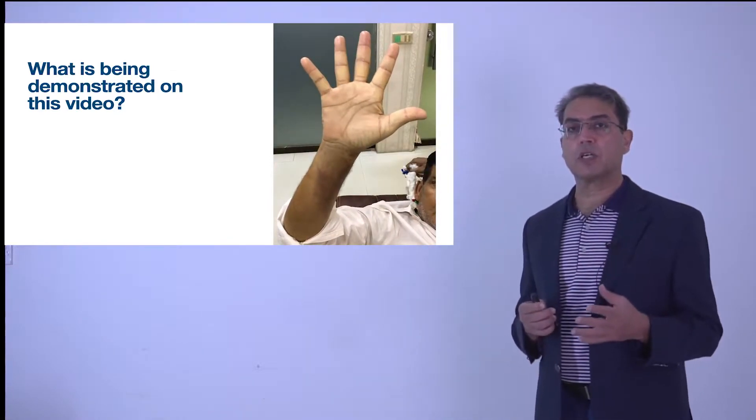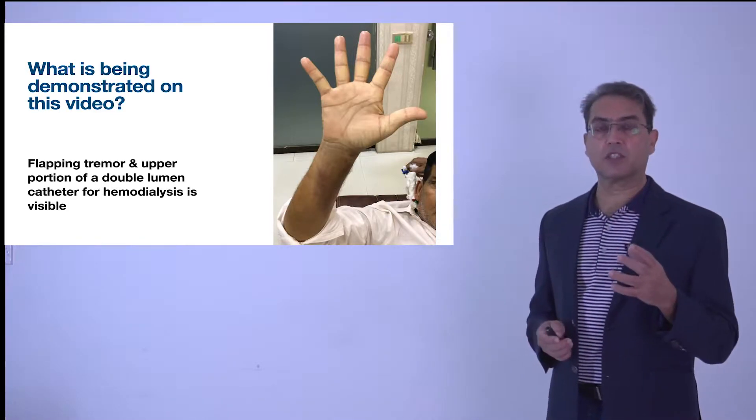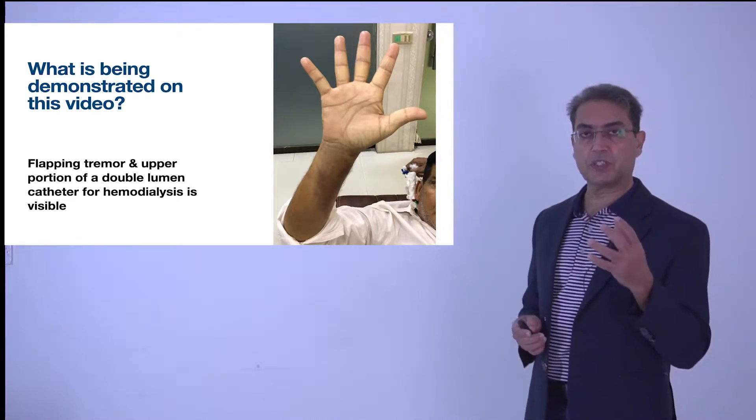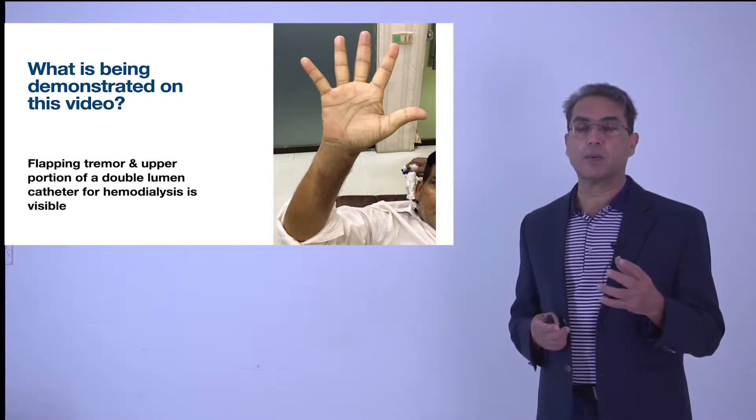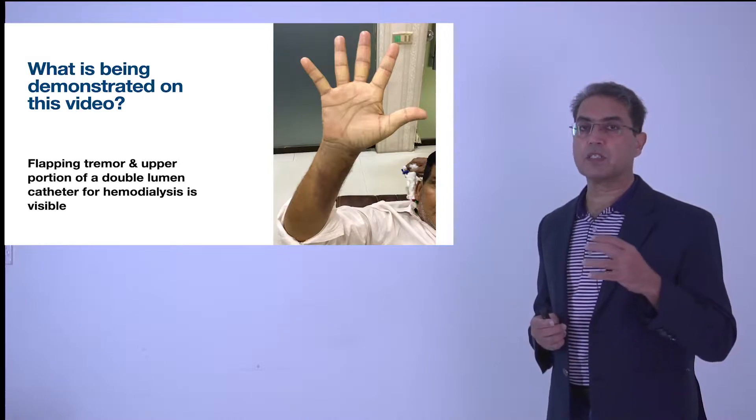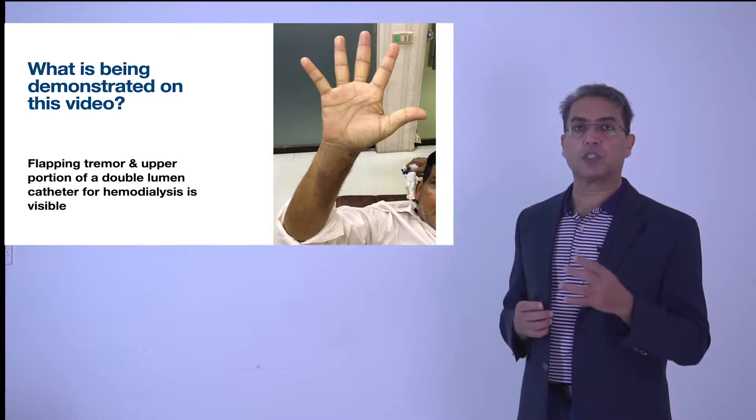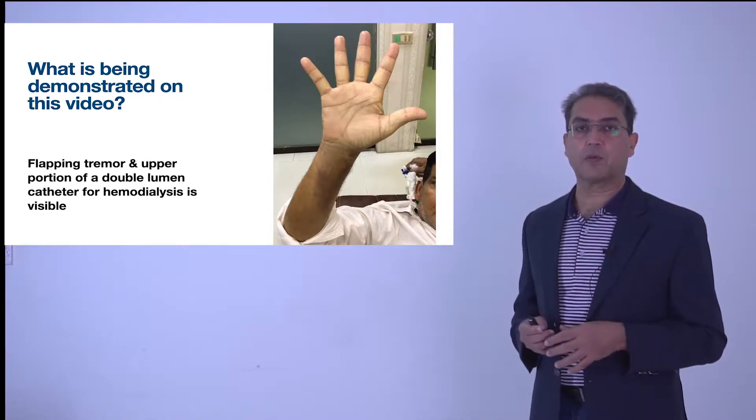In addition to the tremor, you can see the upper end of a double lumen catheter which has been placed in this patient's neck, and through this catheter hemodialysis is being done. So this patient is suffering from renal failure and is demonstrating the jerky movement of the outstretched hands, which is called flapping tremor.